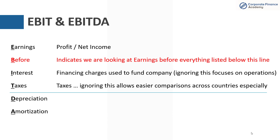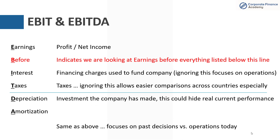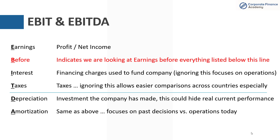Then we've got taxes. Ignoring taxes allows easier comparisons across companies. Different countries have different tax rates, and companies have different tax breaks, incentives, or carry-forward losses. So when you include taxes in a profitability metric, it's hard to compare across companies. Depreciation and amortization is really around the investment the company has made — while a company may have made smart or bad investments in capital equipment, depreciation and amortization may not reflect the company's current performance, as it tilts towards past decisions rather than today's operations.